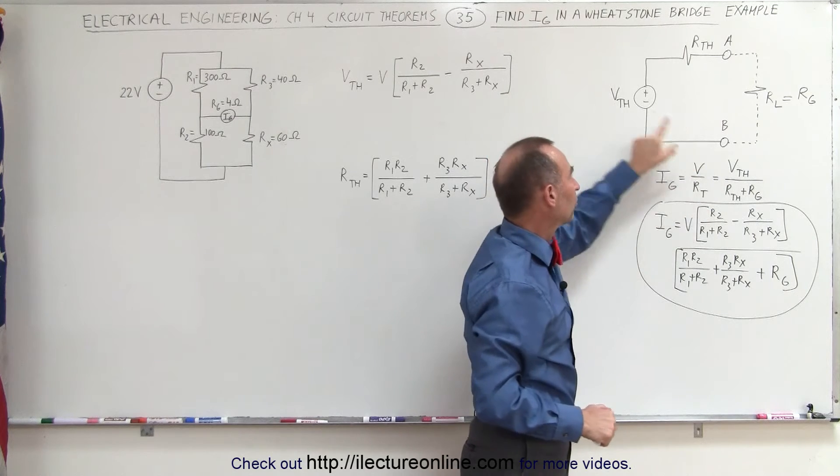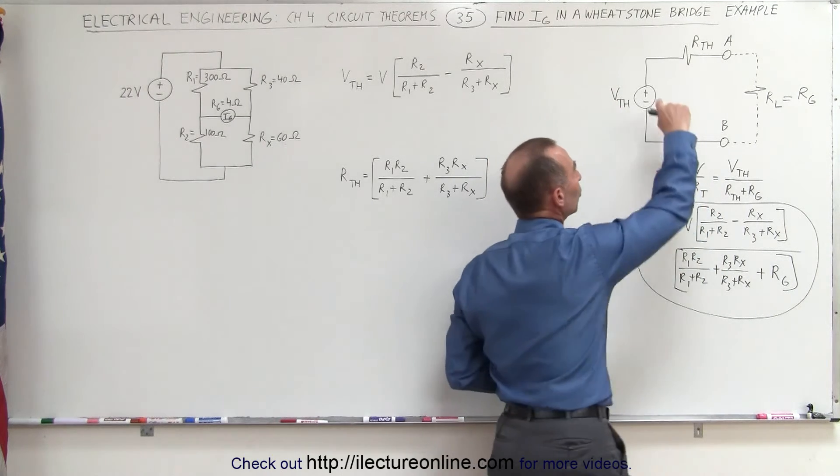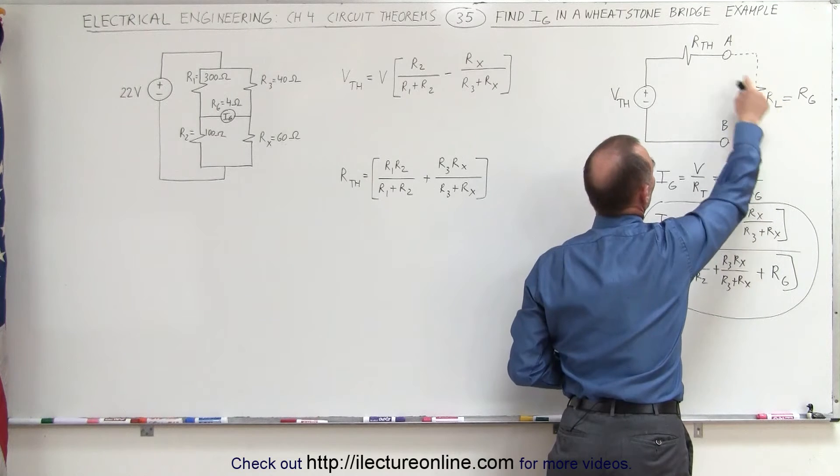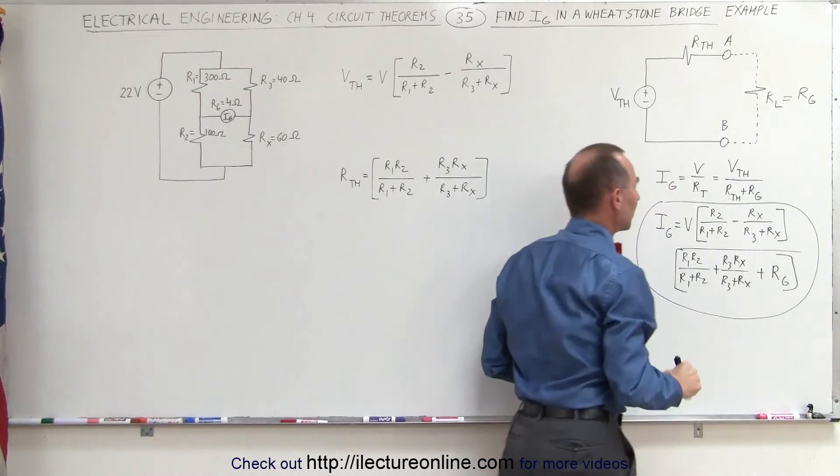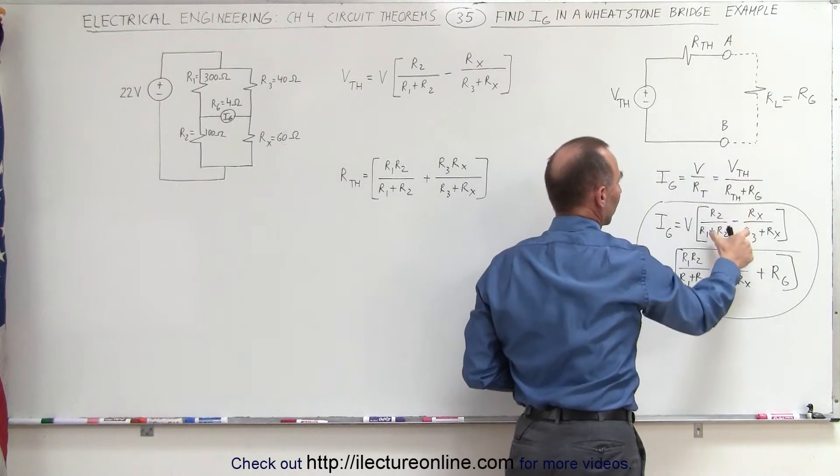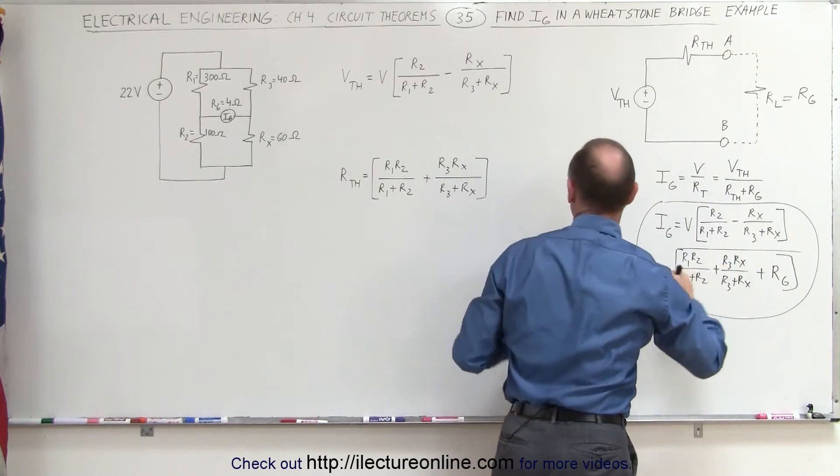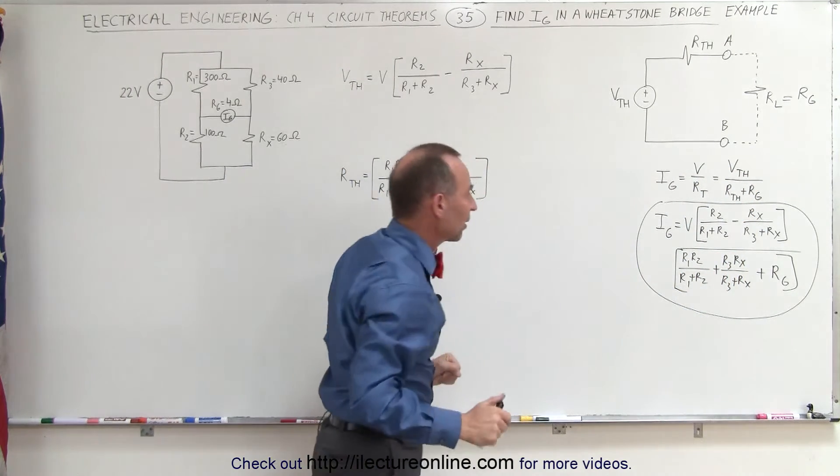In this case the voltage is the Thevenin equivalent voltage. The resistance would be the total resistance of the combination of the Thevenin resistance and the galvanometer resistance combined here. And substituting this and this in the equation we get these two values right here.